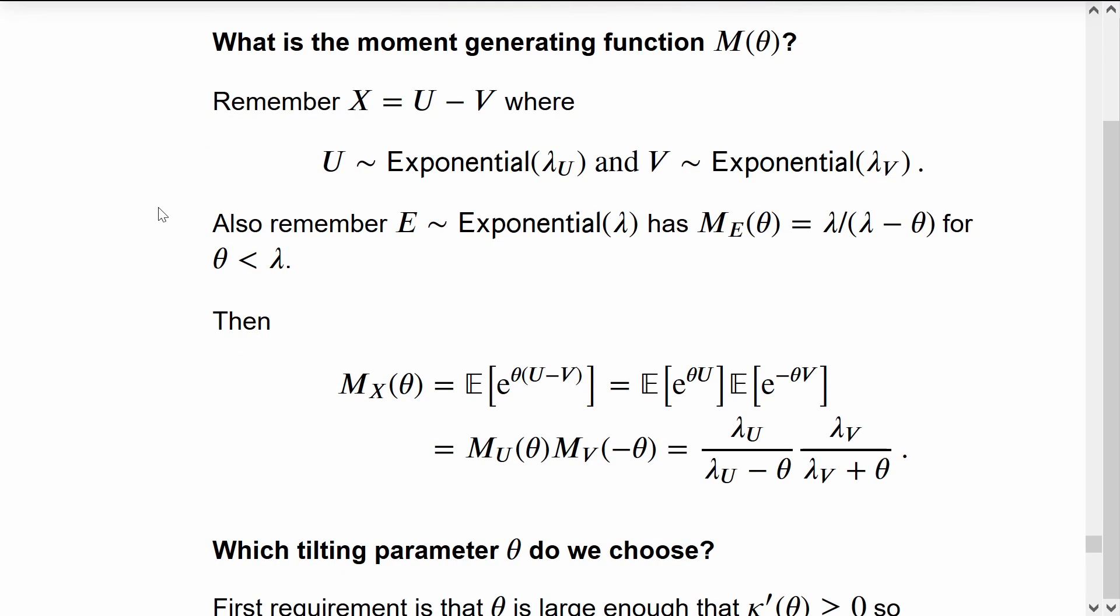So for our specific case, what does this M moment generating function look like? Remember our X's are the difference of independent exponential random variables. If you look at any exponential random variable E with rate lambda, it has a moment generating function of lambda on lambda subtract theta.